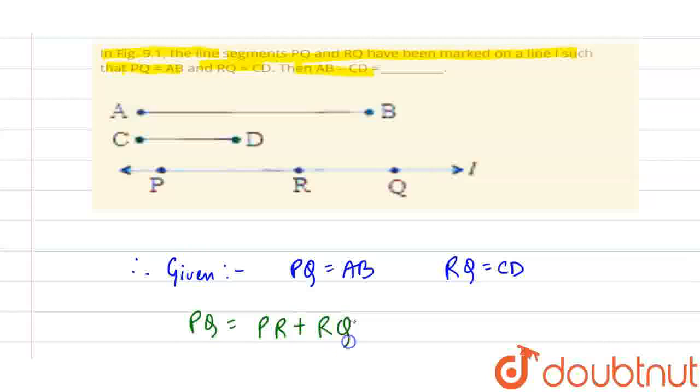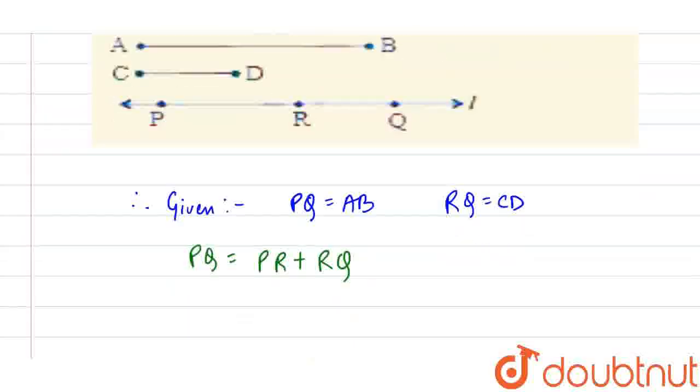PQ किसके equal हो जाएगा PR plus RQ. अब हम यह PQ की और RQ की value है replace कर देंगे. PQ equal to AB है तो हम यह लिख सकते हैं AB.